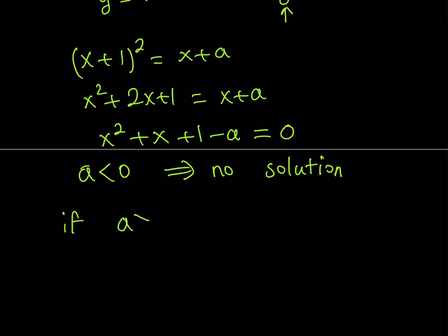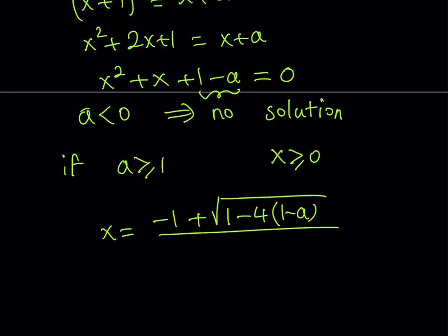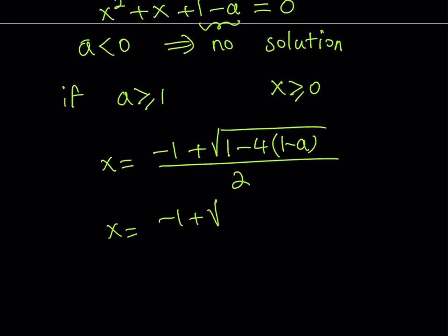But if a is greater than or equal to 1, this expression is going to be 0 or negative, and we can talk about the non-negative solution since x needs to be greater than or equal to 0. From the quadratic formula, we're going to be getting negative b, which is negative 1, plus — because we're only considering the non-negative solution — the square root of b squared minus 4ac, which is 1 minus 4 times 1 minus a. Simplifying, we get negative 1 plus the square root of 4a minus 3, divided by 2. So if a is greater than or equal to 1, this is the only non-negative solution.